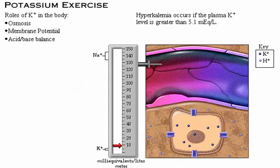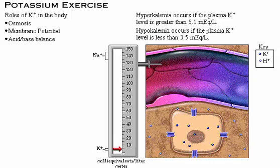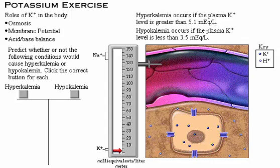Hyperkalemia occurs if the plasma potassium level is greater than 5.1 milliequivalents per liter. Hypokalemia occurs if the plasma potassium level is less than 3.5 milliequivalents per liter.